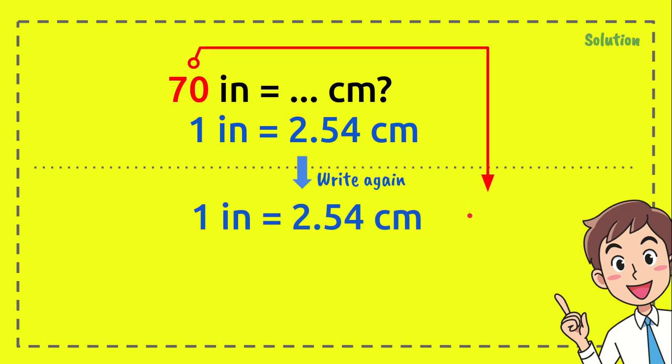And we have 70 from the question. We need to have 70 in here as well. That's a very basic concept of equals, of equation I mean.